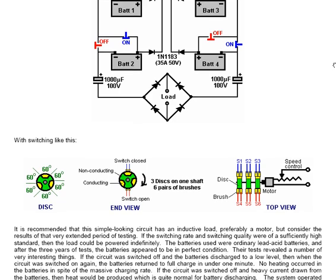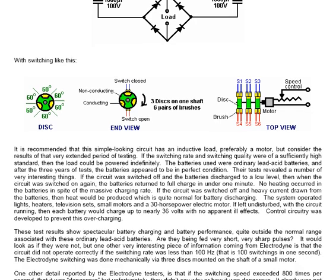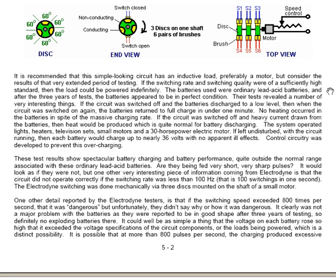The switching arrangement they used was a rotating disc separated into 60-degree sections, where the middle three of those sections are faced in conducting copper. That conducting copper is used to short between pairs of isolated switches, which are alternatively on and off due to the insulating green-shown area. The discs are spun by a motor with a speed control, which controls the speed of the entire operation. It's recommended that this simple-looking circuit has an inductive load, preferably a motor.